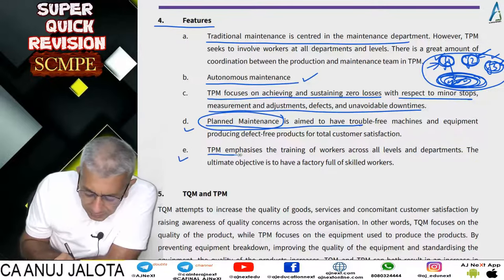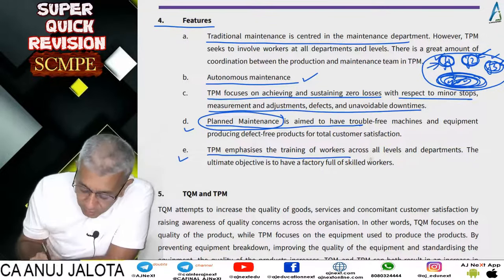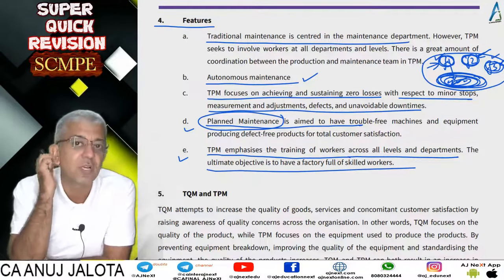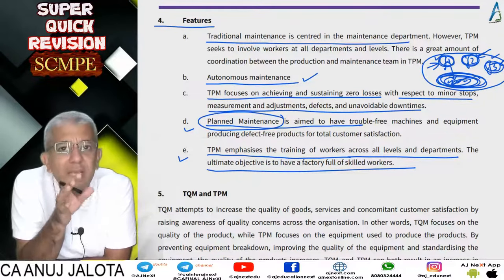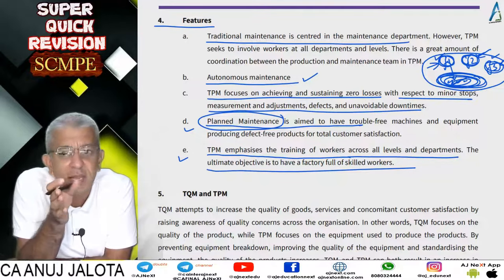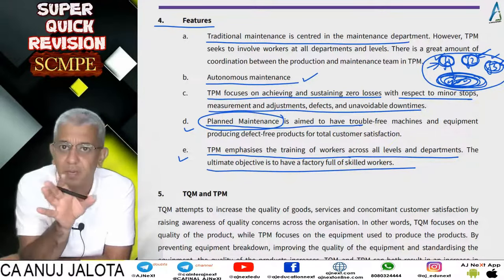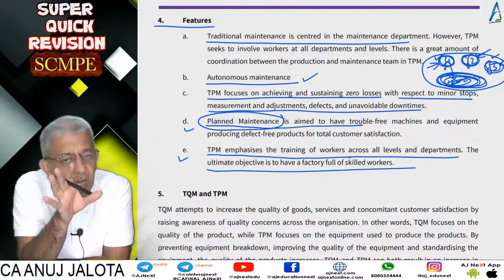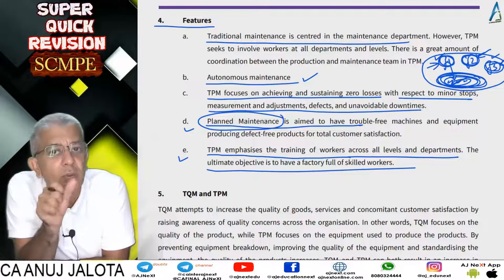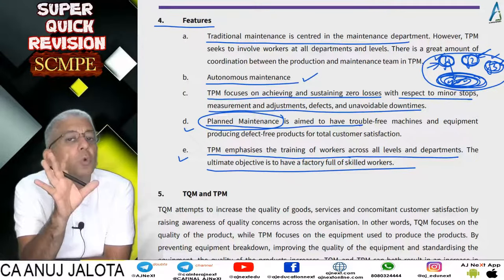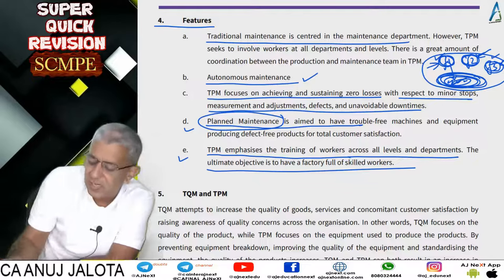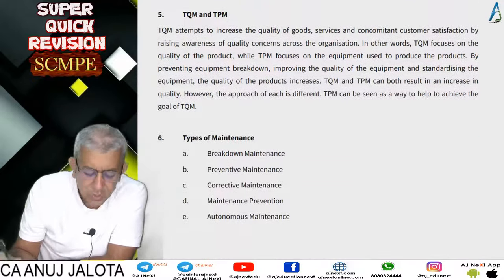TPM emphasizes training of workers across all levels. The ultimate objective is to have a factory full of skilled workers. We try to train workers so they know how to run machines properly and handle minor problems. For major problems, the maintenance department is still there. So we will still have our maintenance department, but the workers will be skilled enough to handle day-to-day issues.